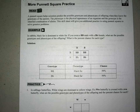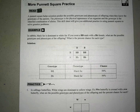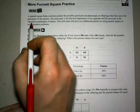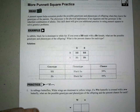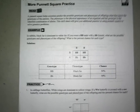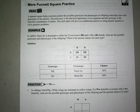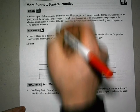So, these are some Punnett Square practice problems. There's a couple terms I want to go over before we get started. A Punnett Square helps scientists predict the possible genotypes and phenotypes of offspring when they know the genotypes of the parents.